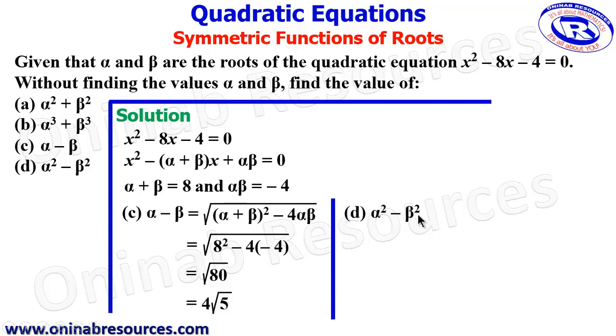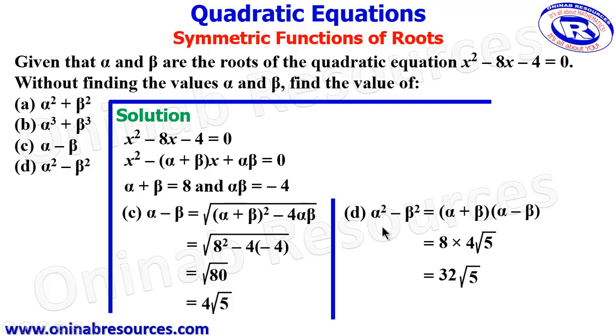We then go for (d), alpha squared minus beta squared. This is difference of two squares, giving us alpha plus beta times alpha minus beta. Fortunately, we've gotten alpha minus beta to be 4 root 5, and we have our alpha plus beta. Substituting, we have 8 times 4 root 5. Simplifying this, we have 32 root 5, which gives the value of alpha squared minus beta squared. And that's the end of solution to this problem.